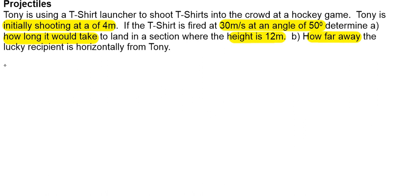Let's write down what we have. We know that we start at a height of four meters and the initial velocity is 30 meters per second at 50 degrees. We know the final height is 12 meters and we're looking for the time. We know anything that's moving in the vertical direction has an acceleration that is equal to gravity, which is negative 9.8 meters per second squared.